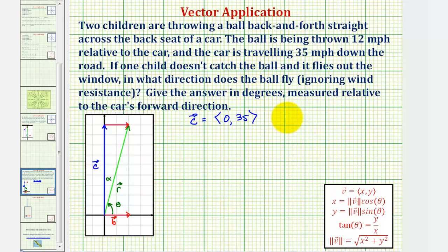For vector b, because it's along the x-axis and it's traveling at 12 miles per hour, the x component would be 12, and the y component would be zero. Therefore the resultant vector, which is the sum of vectors c and b, would have an x component of 12 and a y component of 35.